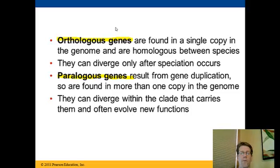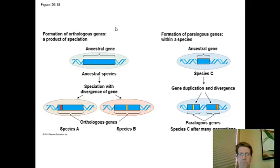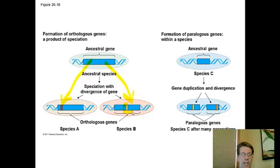Orthologous genes, using hemoglobin as an example: dogs have hemoglobin and humans have hemoglobin, but the genetic makeup of those genes is different in dogs and humans. Here's how it works: a common ancestor undergoes a speciation event producing two separate organisms — here's the dog gene for hemoglobin, here's the human gene for hemoglobin. The functions are the same, but the genetic code is slightly different, having evolved separately since diverging from their common ancestor.